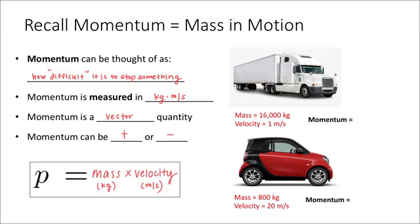If we take a look at an example, this 18-wheeler truck has a mass of 16,000 kilograms, and let's say that it's traveling very slowly at a velocity of one meter per second. Its momentum would just be its mass multiplied by its velocity — nothing squared here — and that would be 16,000 kilogram meters per second. Now this little smart car right below the 18-wheeler is actually going to have the same amount of momentum as the 18-wheeler.